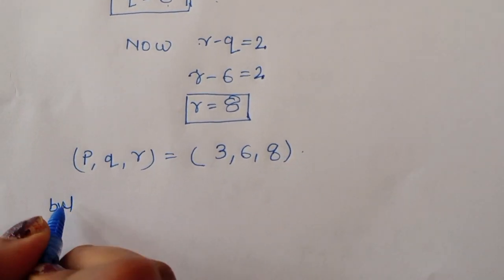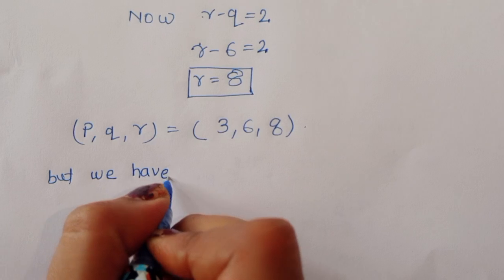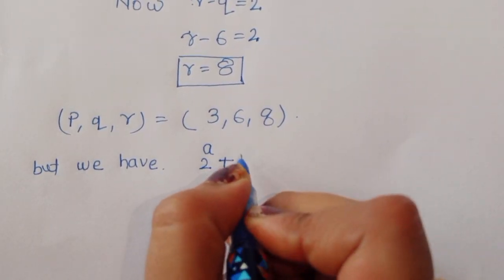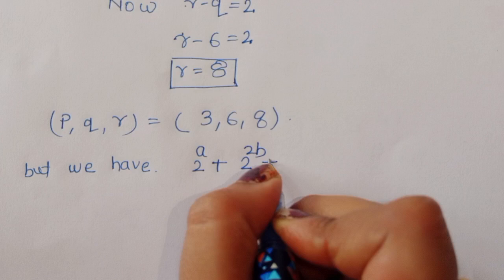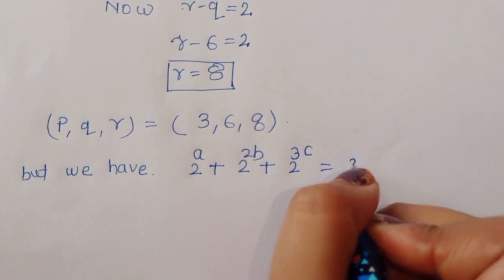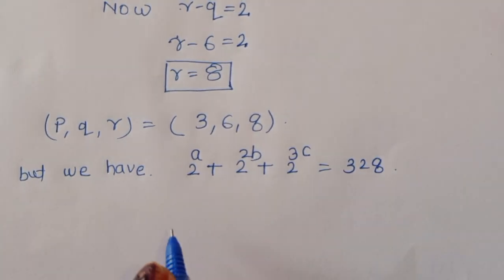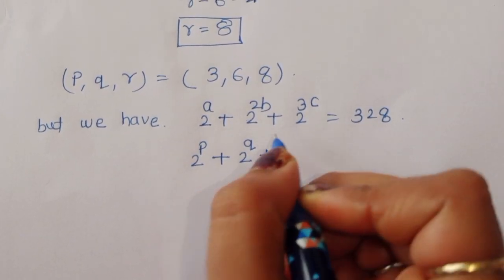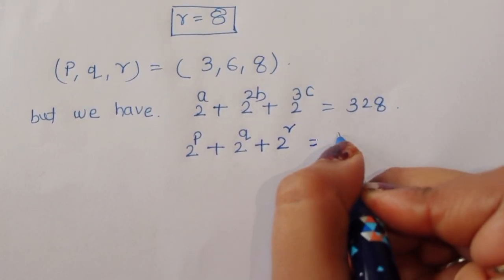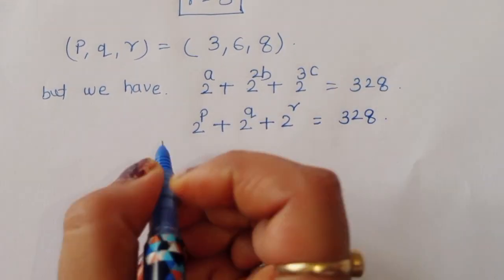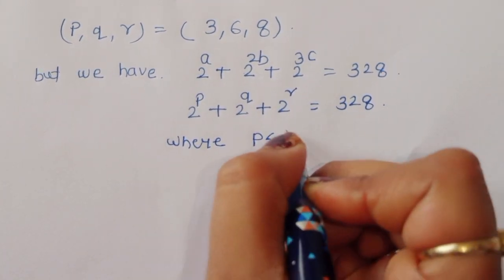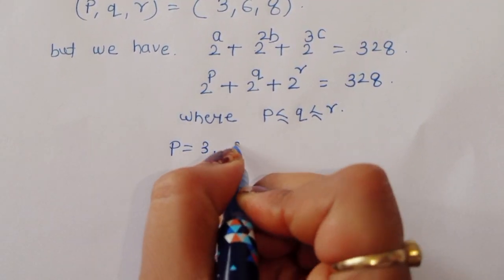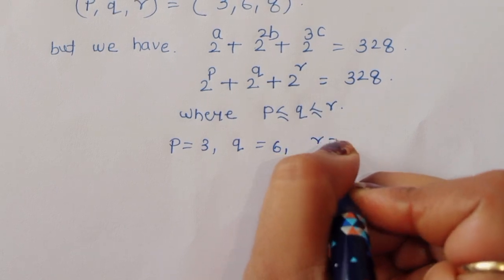Recall our original equation: 2^A + 2^(2B) + 2^(3C) = 328, where A = P, 2B = Q, and 3C = R, with the condition P ≤ Q ≤ R. So P = 3, Q = 6, and R = 8, meaning A, 2B, and 3C equal 3, 6, and 8 respectively.